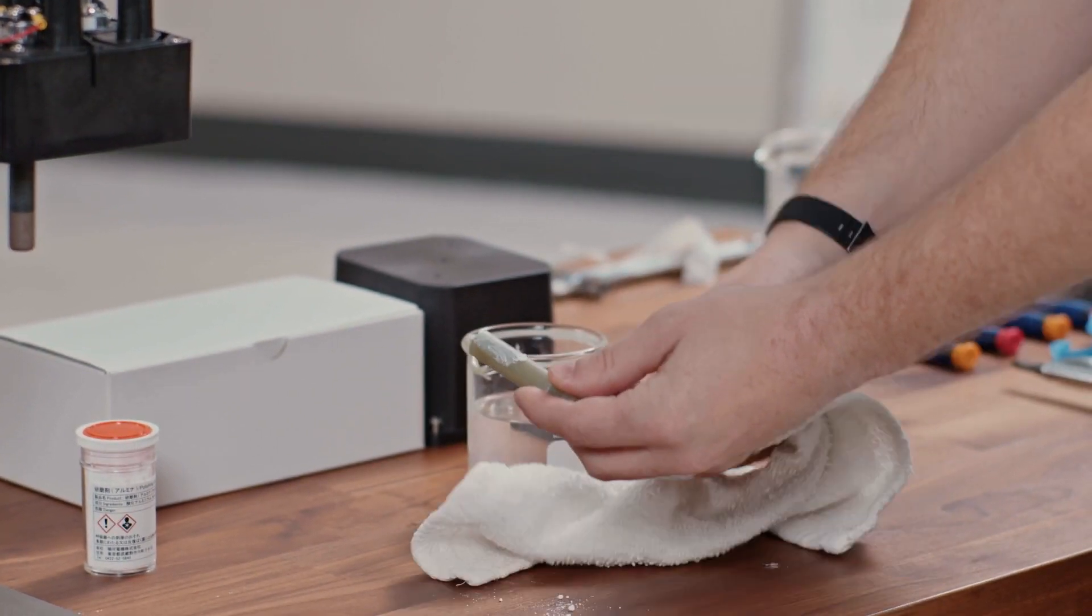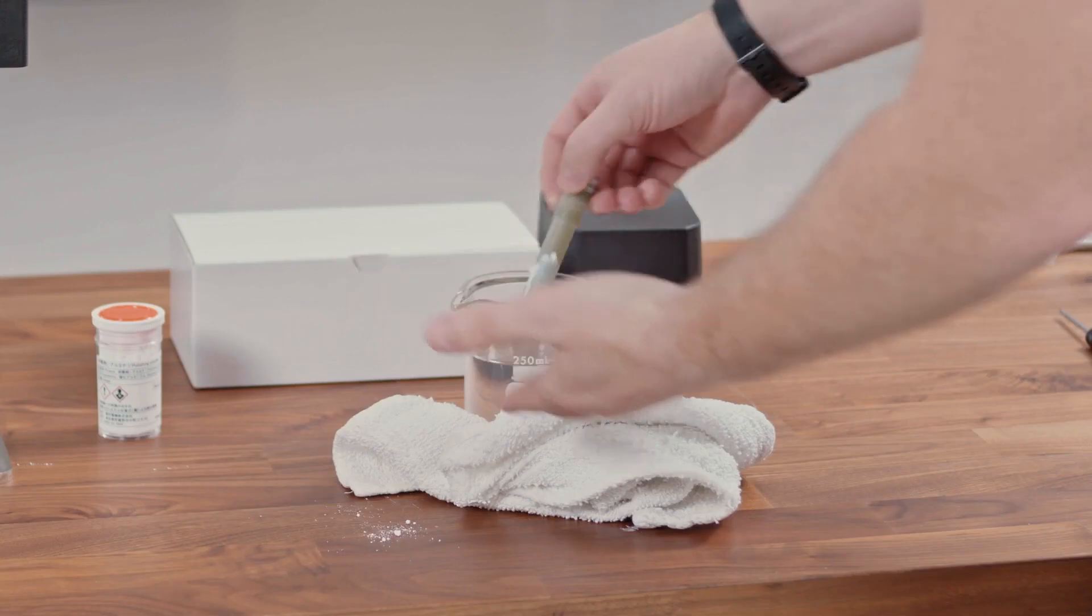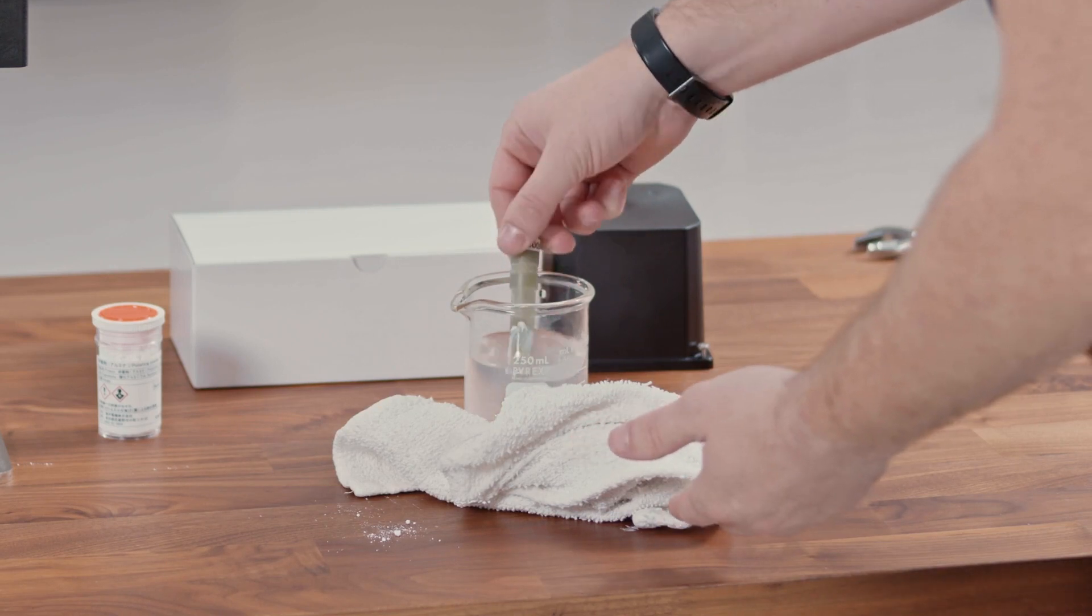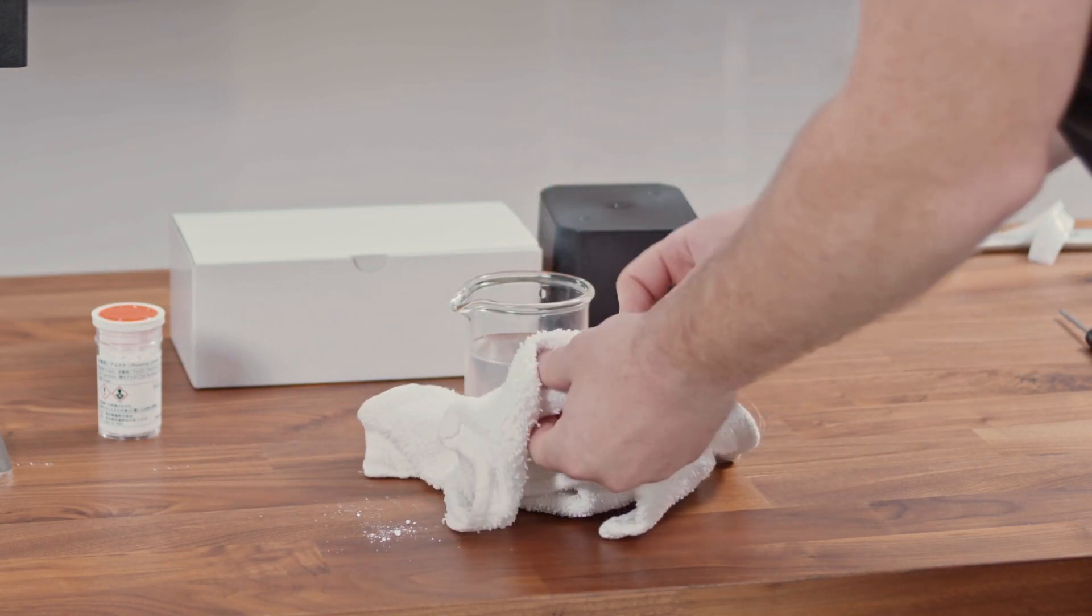Once the electrode is smooth, you can rinse off the electrode and make sure you're removing any alumina oxide powder because this can be hazardous to people.